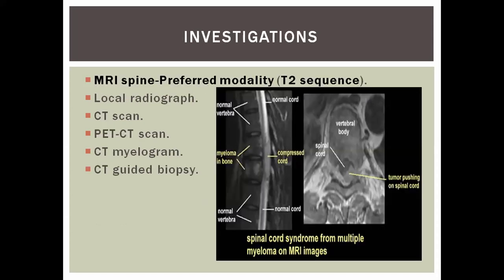For investigations, MRI spine is the preferred modality of choice, preferably the T2 sequence, which provides the best visualization of the involved segment. Additional investigations include plain radiographs, CT, and PET-CT, mostly as staging investigations. If MRI is not feasible, CT myelogram is the choice. If there is diagnostic uncertainty, CT-guided biopsy from the bony segment will lead to histological diagnosis.